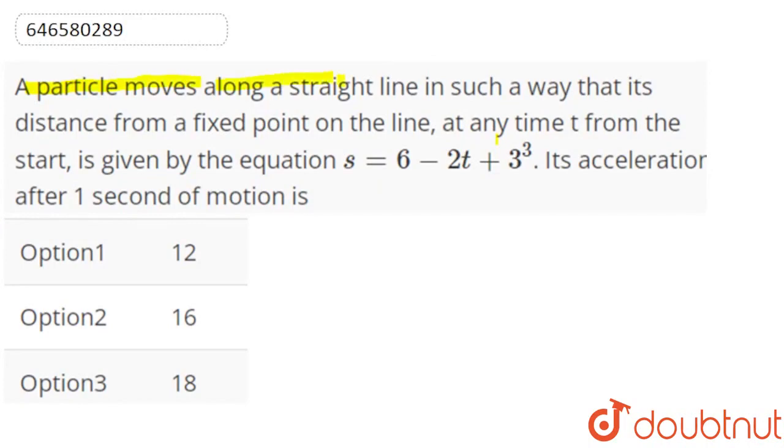A particle moves along a straight line in such a way that its distance from a fixed point on the line, at any time t from the start, is given by the equation s = 6 - 2t + 3t³. Its acceleration after one second of motion is: